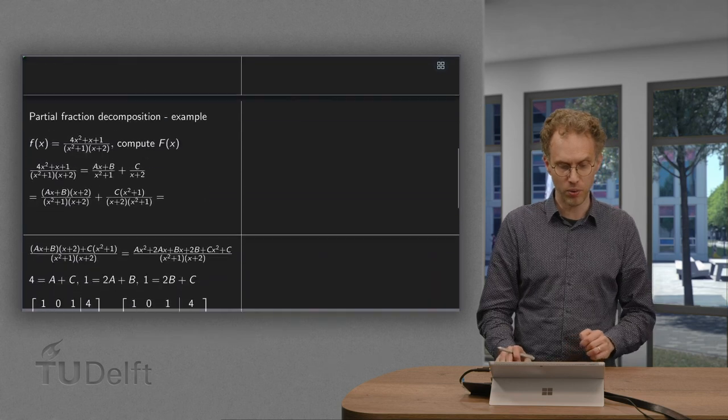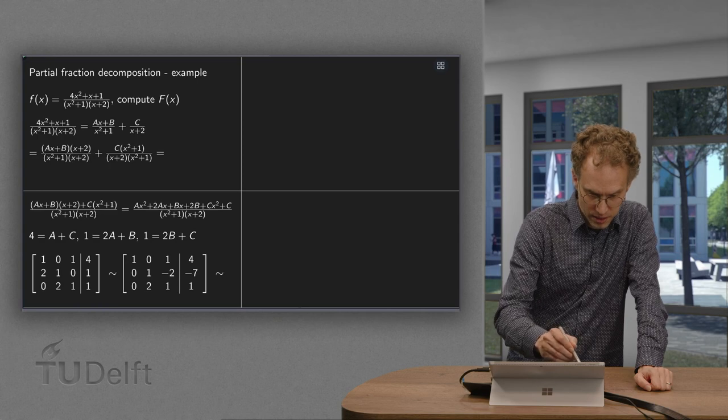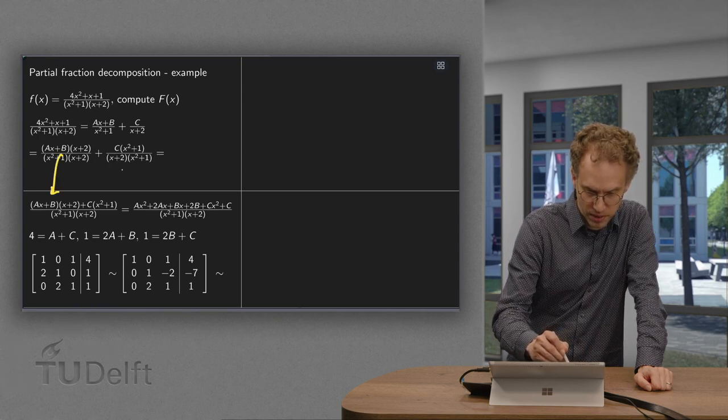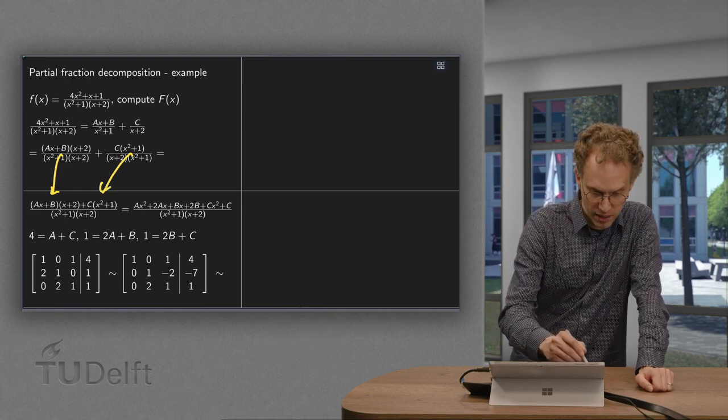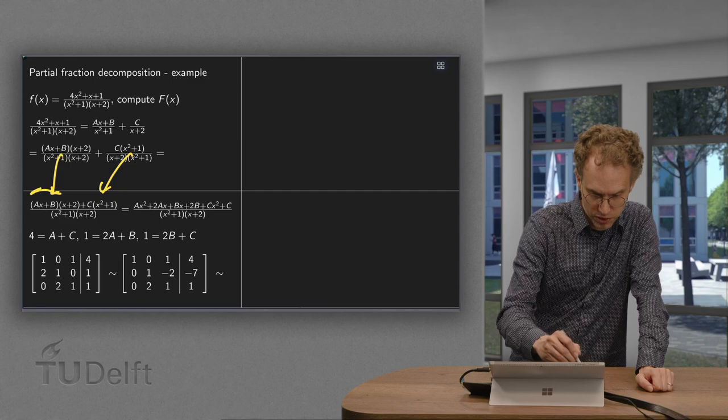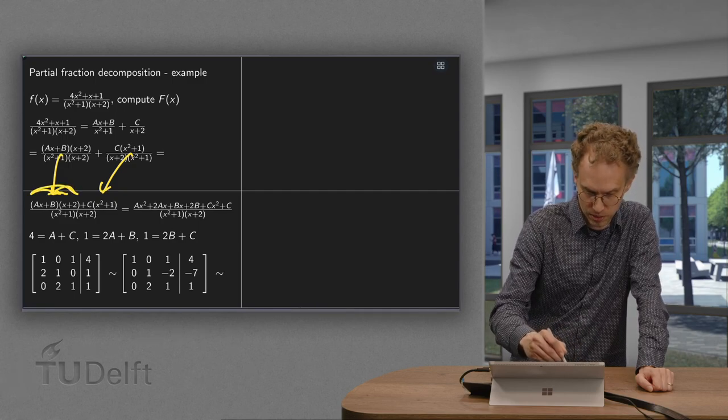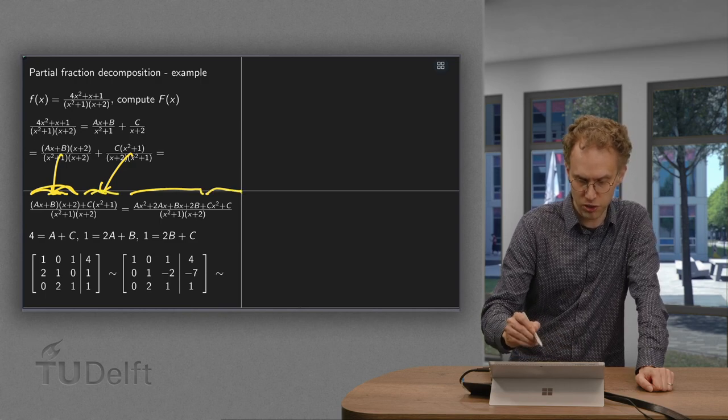And then we work out the brackets. So here we have the first term. Here we have the second term. What do we have? An ax squared plus 2ax plus abx plus 2b. So those are those four terms. Plus cx squared plus c are those two terms.